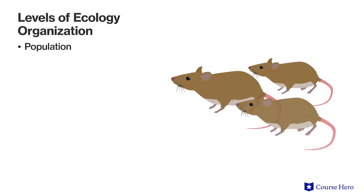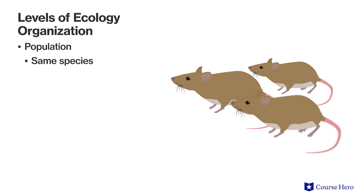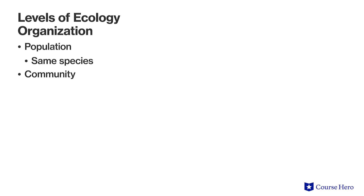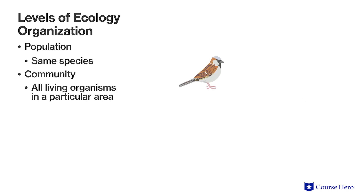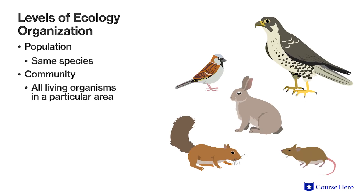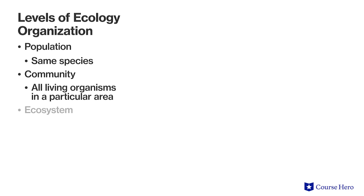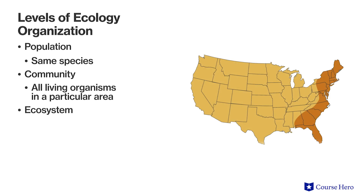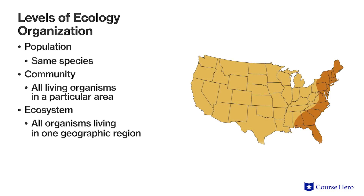A population is defined as an interbreeding group of individuals of the same species. A community consists of all the living organisms living in a particular area. An ecosystem includes all organisms living in one geographic region and all the environmental factors such as temperature and water availability that affect those organisms.